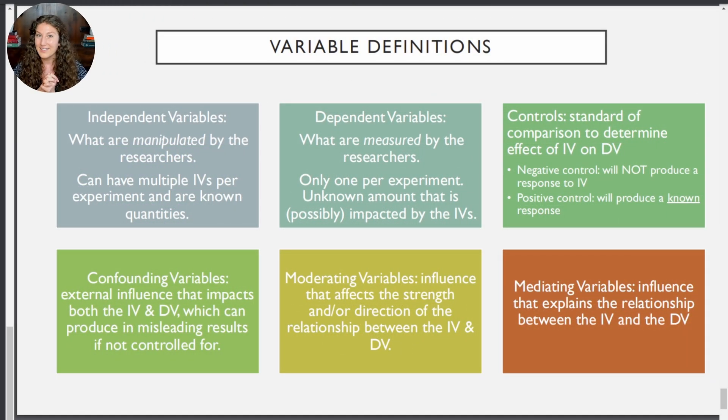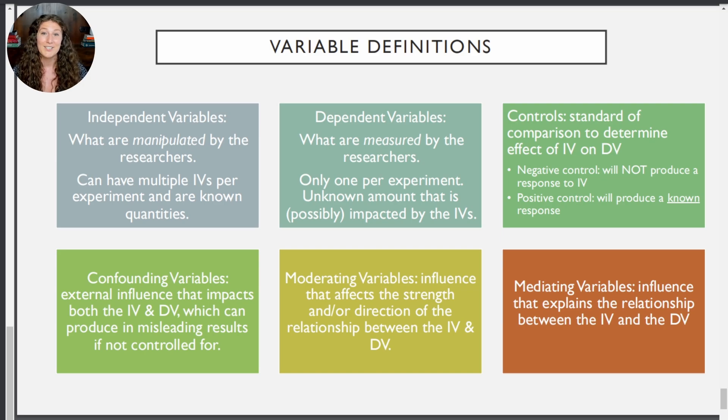And here we have all the definitions of the major types of variables you'll see in research design that we'll need to use for critical reasoning in science-based passages and sections of standardized tests. Feel free to take a screenshot of this screen so you have all the information handy. And that was my lesson on research design variables. I hope you found it helpful, and if you'd like more videos in this format on basic MCAT skills, please let me know in the comments below. Thanks for joining me, and as always, happy studying!